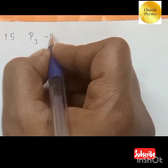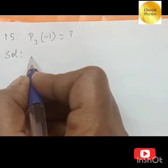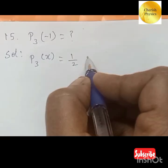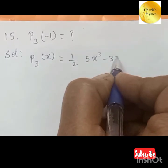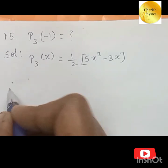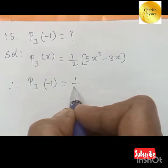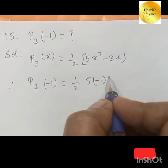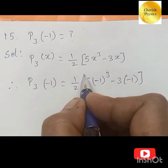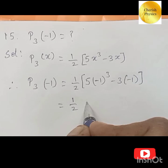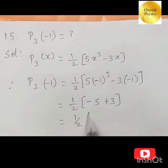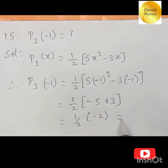15th question: find the value of P₃(minus 1). We know P₃(x) = (1/2)(5x³ − 3x). Substituting x = minus 1: P₃(minus 1) = (1/2)(5·(minus 1)³ − 3·(minus 1)) = (1/2)(minus 5 + 3) = (1/2)(minus 2) = minus 1.